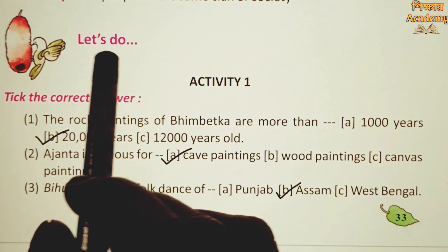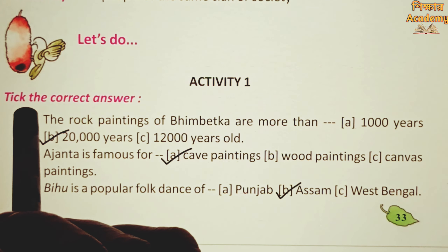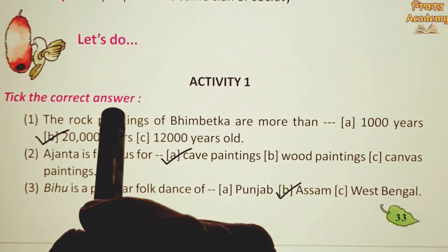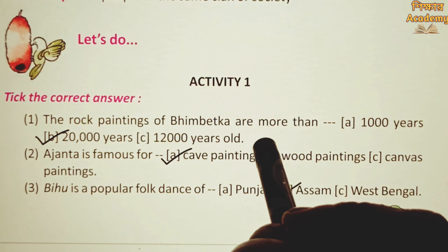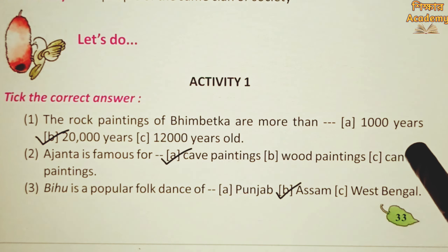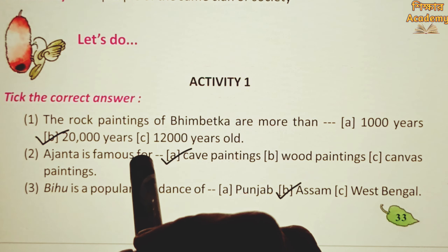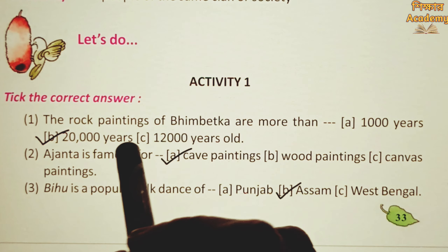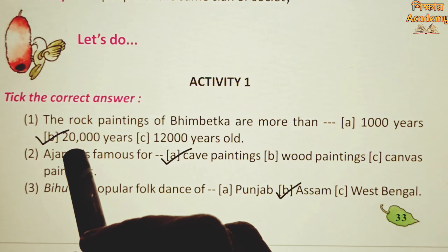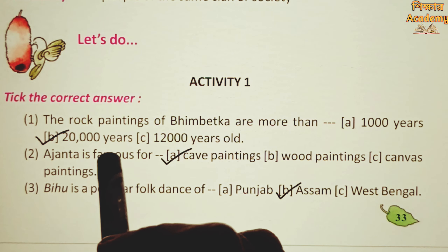Let's do Activity 1. Tick the correct answer. The rock paintings of Bhimbetka are more than 1,000 years, 20,000 years, or 12,000 years old. The correct answer is 20,000 years.